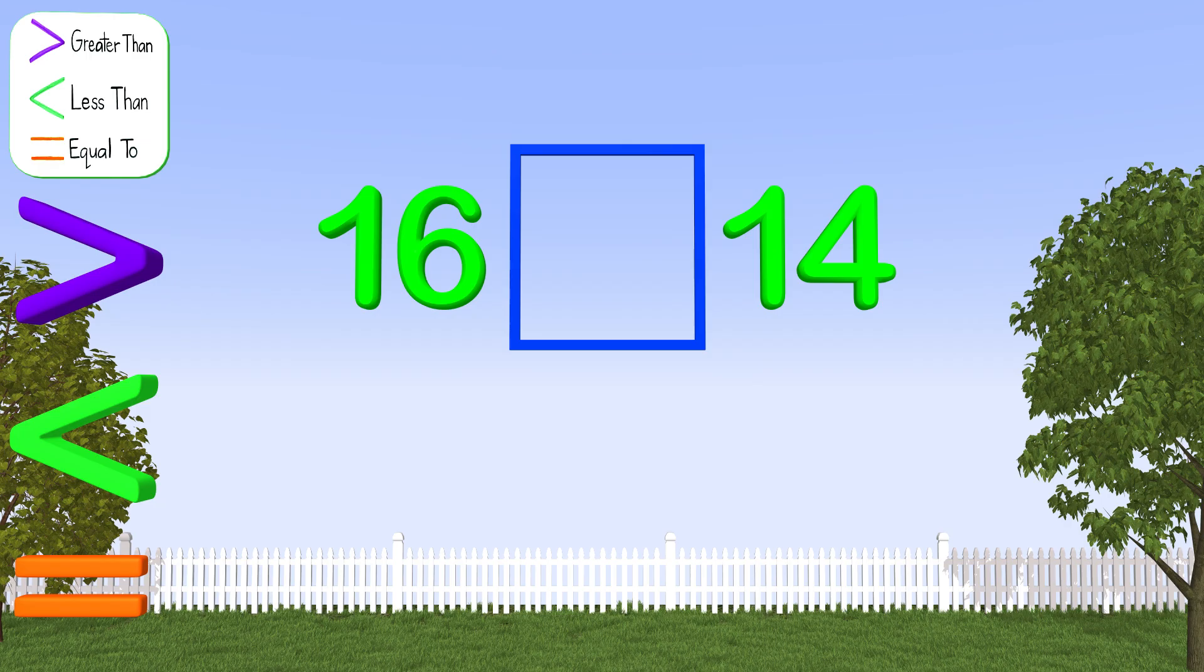The number 16 is made up of one ten and six ones. We have one tens block, which represents the one in the tens place, and six ones to represent the six in the ones place. For the number 14, how many tens blocks do I need?